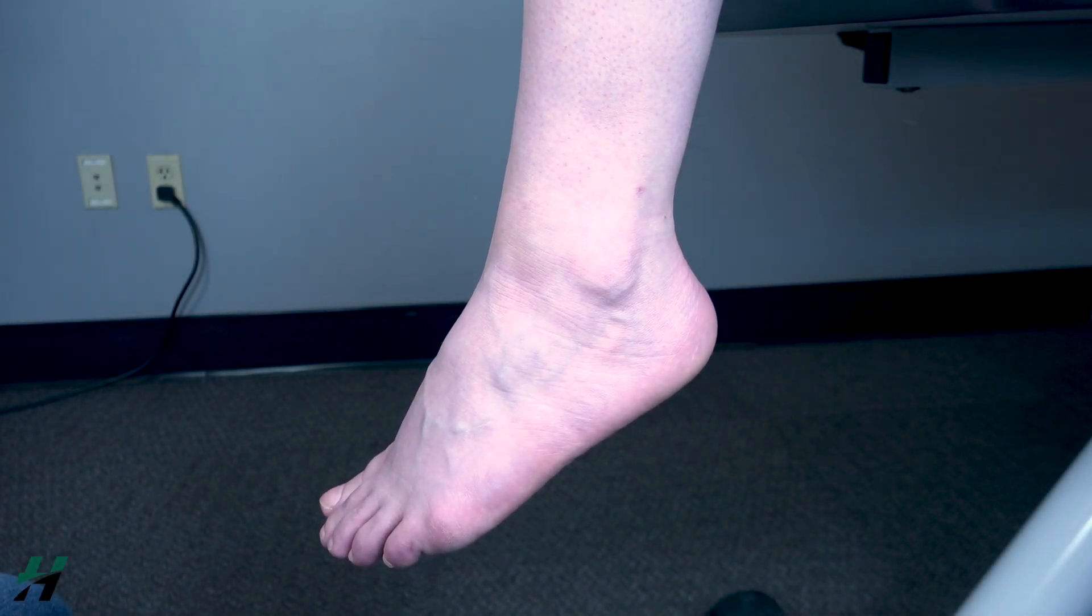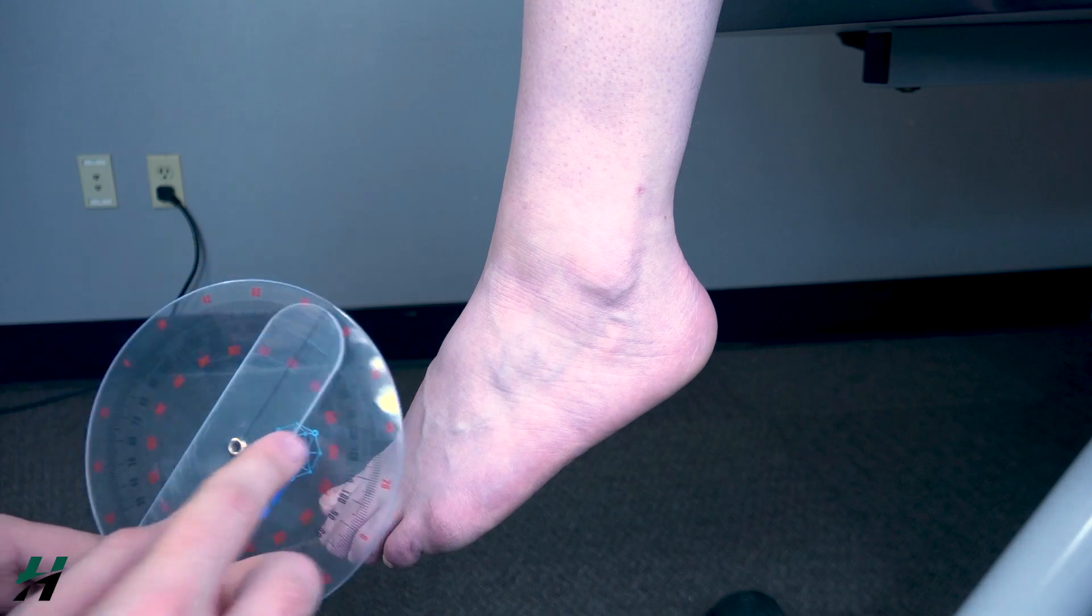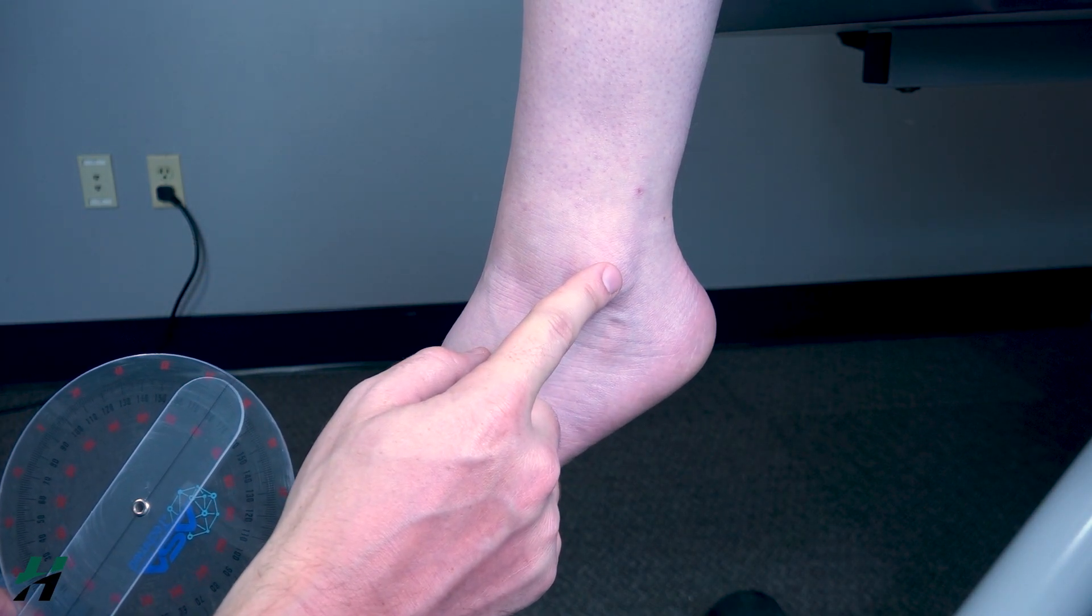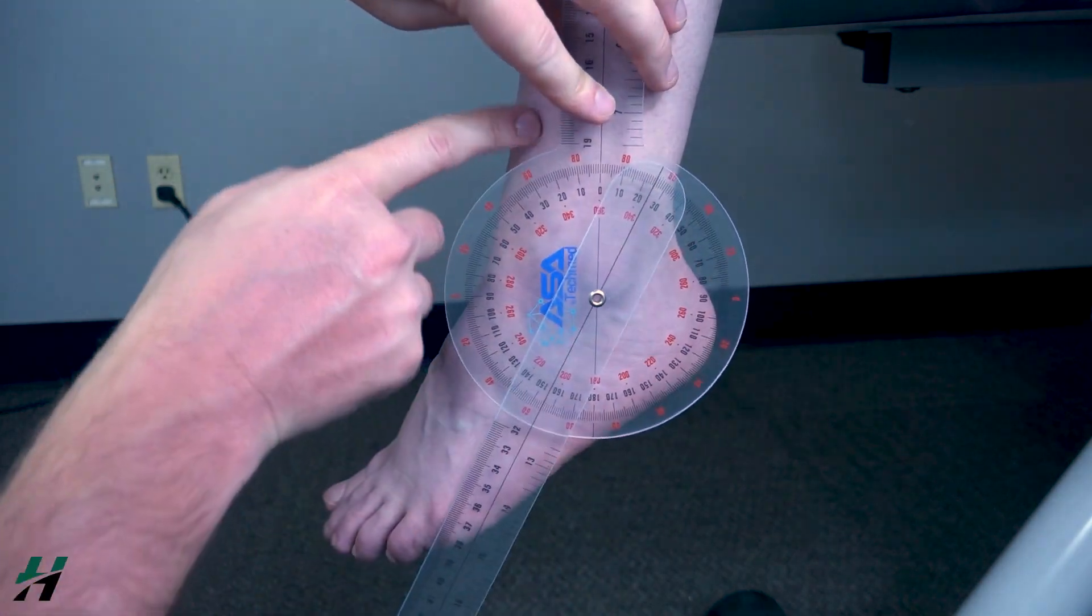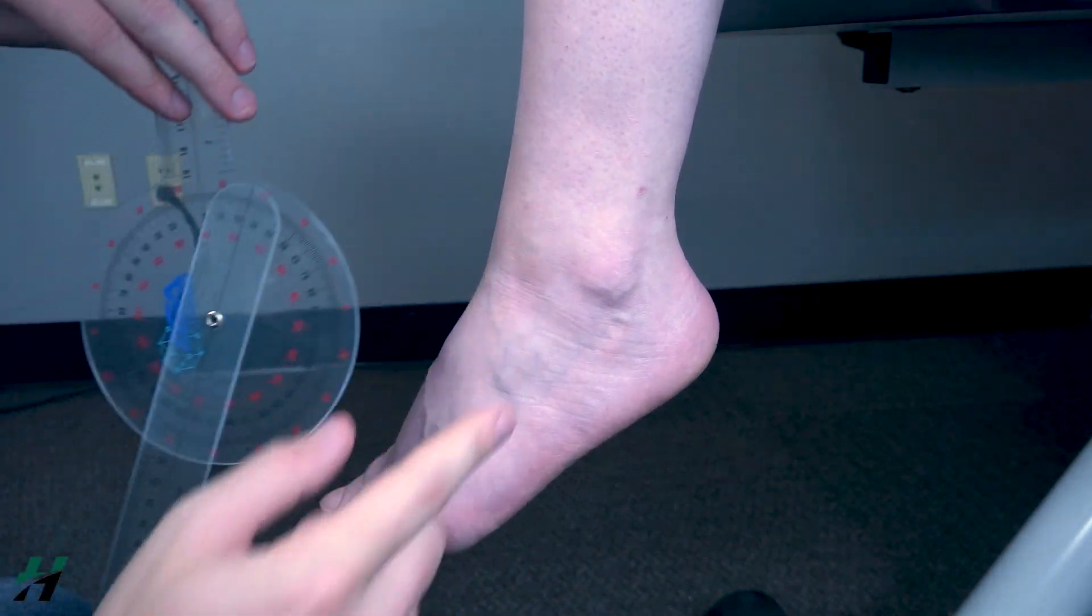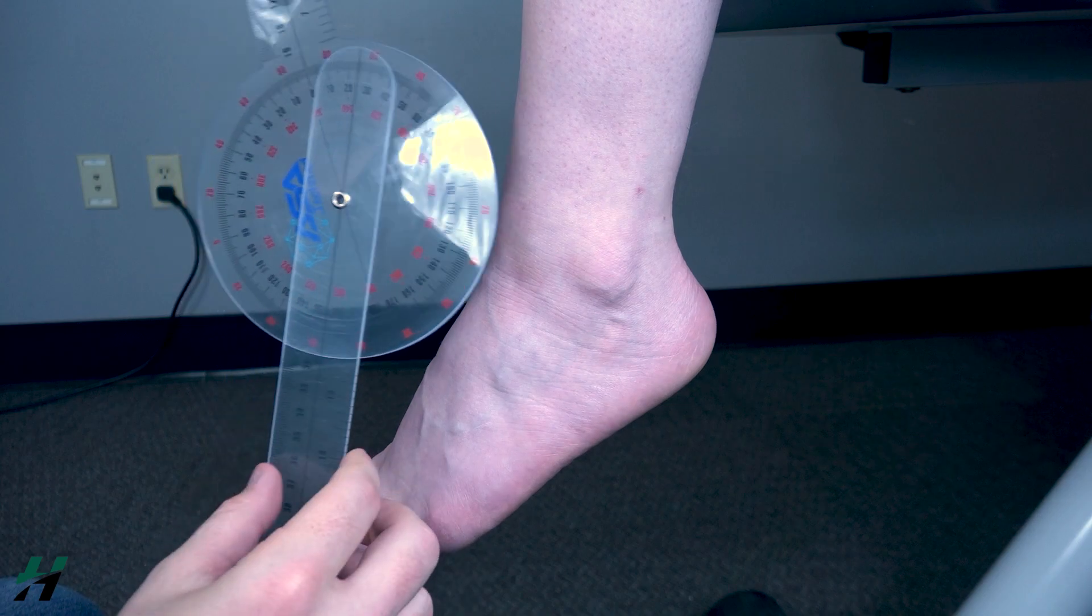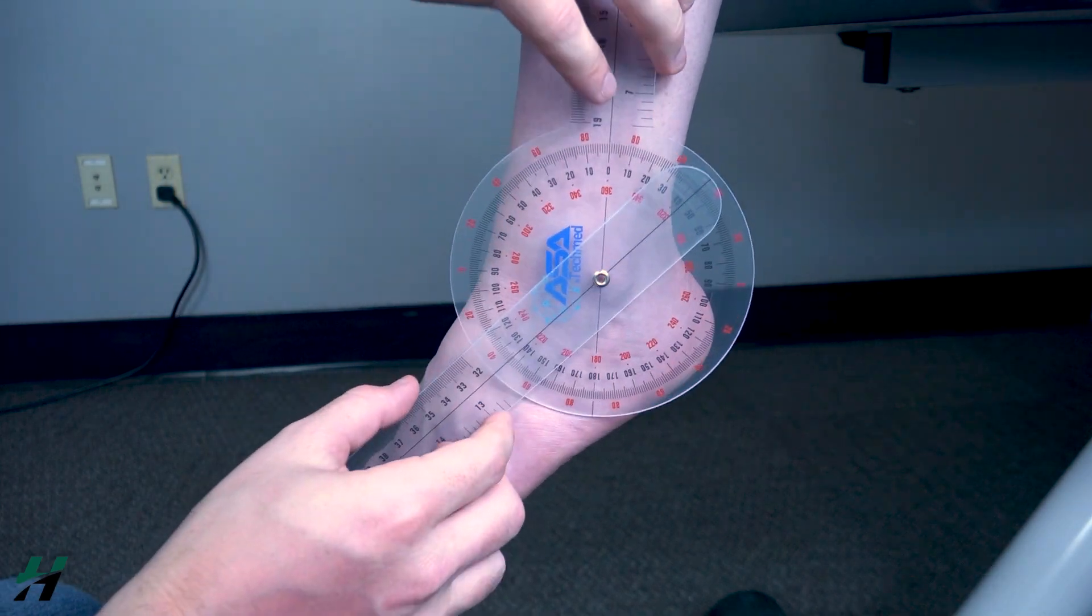Measuring ankle dorsi and plantar flexion, you want the axis of your goniometer to be on the lateral malleolus of the ankle, the stationary arm aligned with the shaft of the fibula, and the movement arm on the base of the fifth metatarsal, like this.